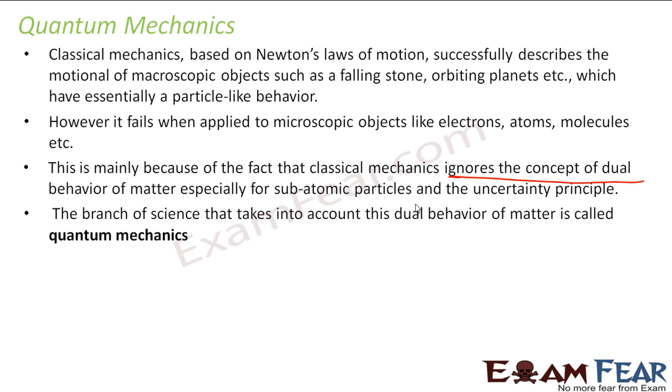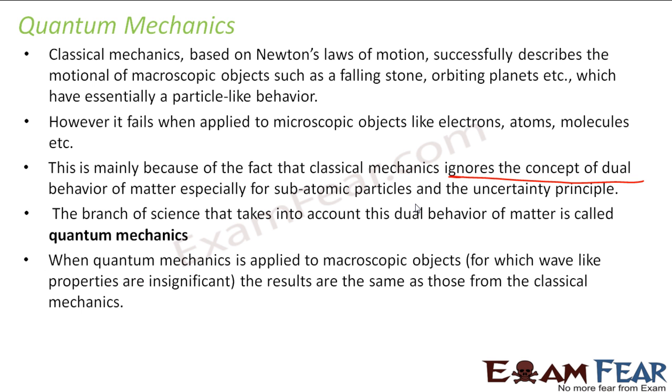The branch of science that takes into account the dual behavior of matter is called quantum mechanics. When quantum mechanics is applied to macroscopic objects for which wave-like properties are insignificant, the results are the same as those for classical mechanics. So, that means quantum mechanics hold true for microscopic as well as macroscopic objects. For macroscopic objects, quantum mechanics and classical mechanics are the same. For microscopic objects, classical mechanics is a failure but quantum mechanics is a success.